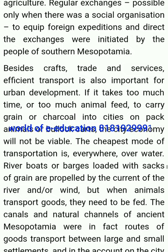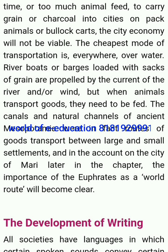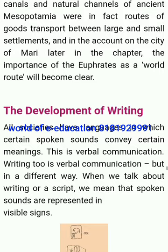Efficient transport is also important for urban development. If it takes too much time or too much animal feed to carry grain or charcoal into cities on pack animals or bullock carts, the city economy will not be viable. The cheapest mode of transportation is everywhere over water. River boats or barges loaded with sacks of grain are propelled by the current of the river and wind. Canals and natural channels of ancient Mesopotamia were in fact routes of goods transport between large and small settlements, and the importance of the Euphrates as a trade route will become clear in the account of the city of Mari later in the chapter.